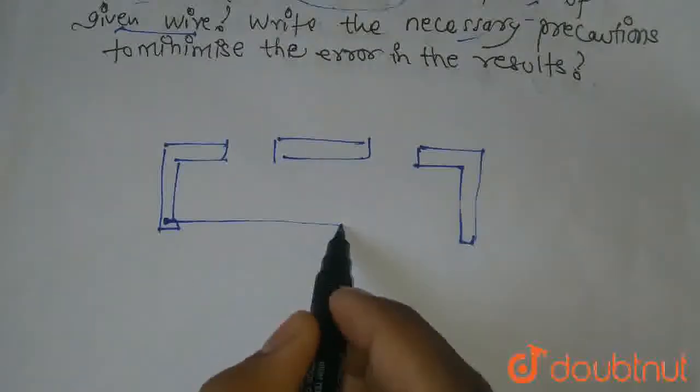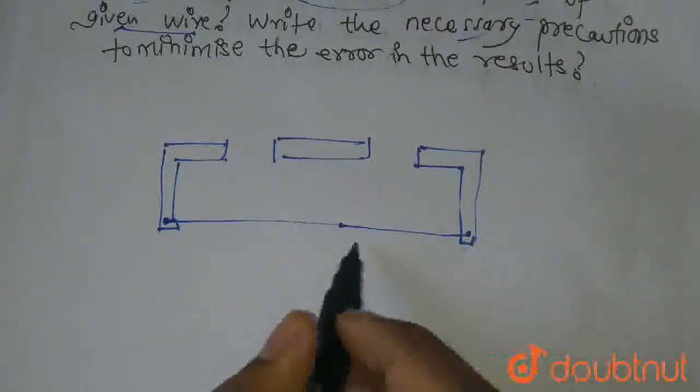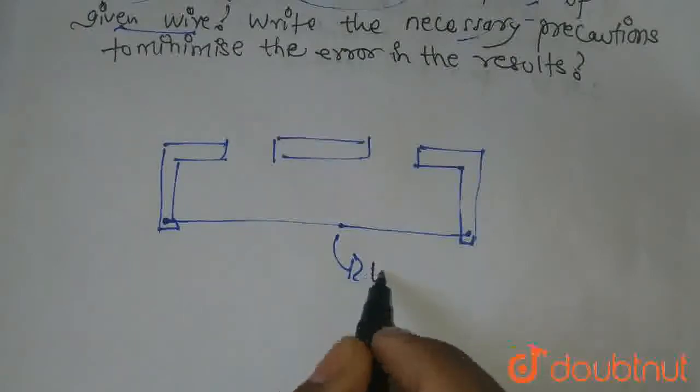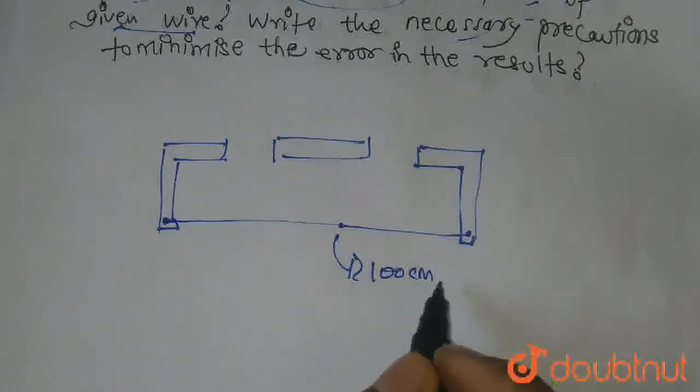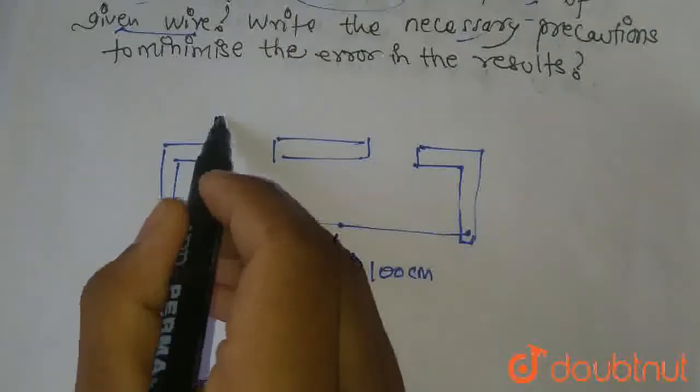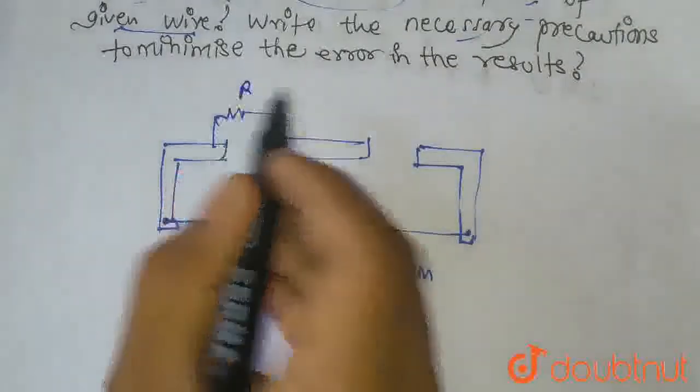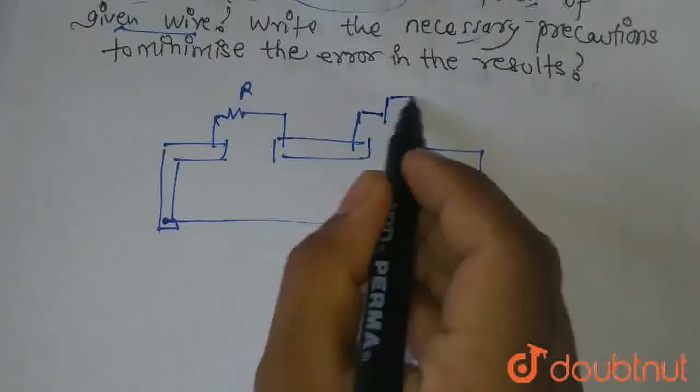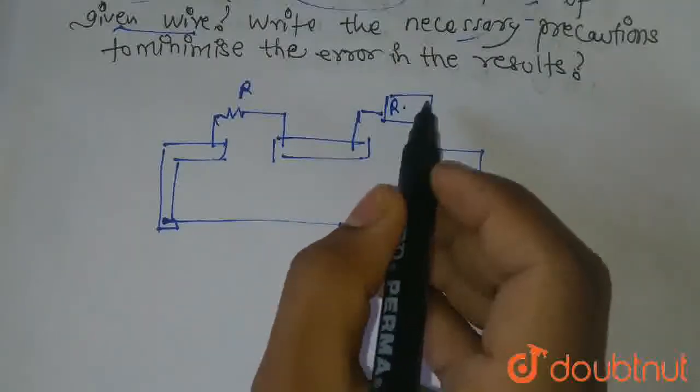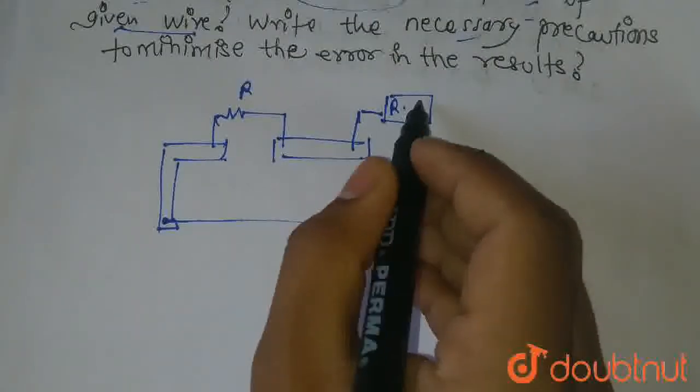This is our lead wire and the resistance wire. This is the length of the resistance. Here I have an unknown resistance, suppose R, and I have a resistance box. This is the resistance which you can adjust.